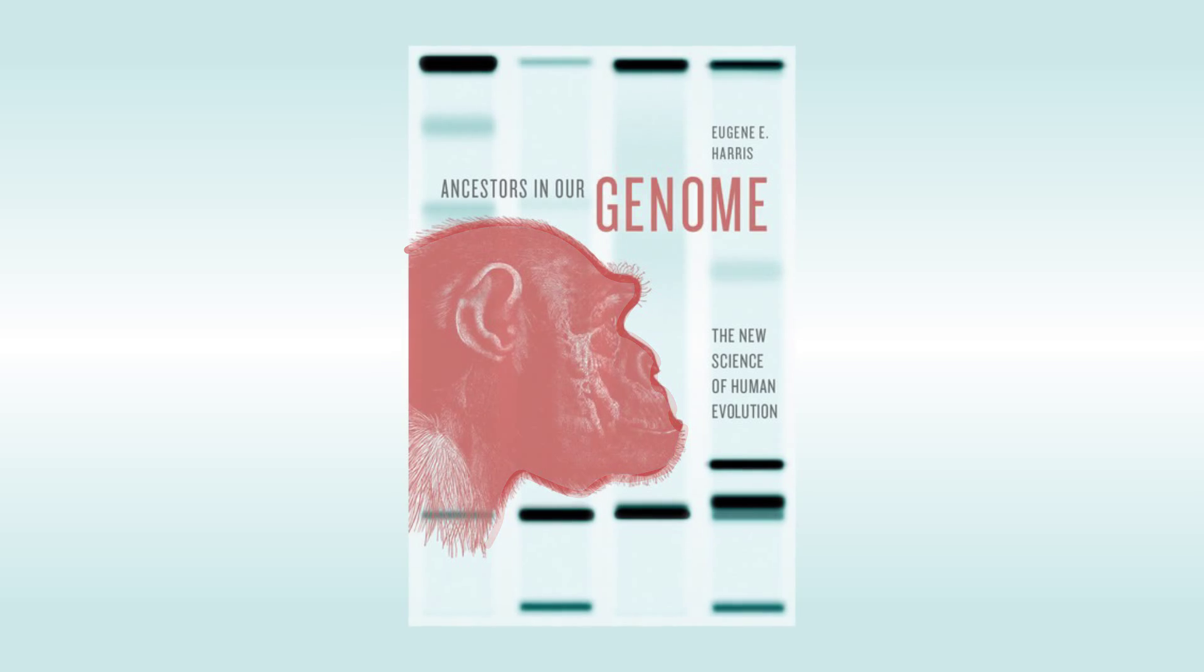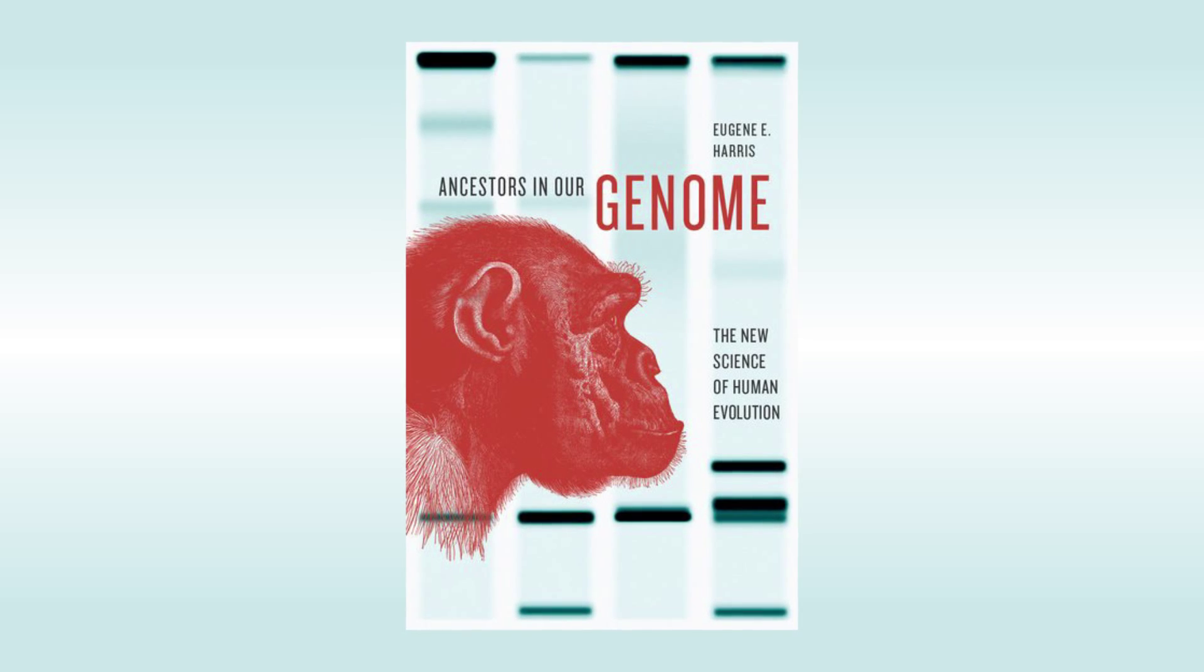Can the source of our ability to communicate using complex languages and to walk upright be found by learning to read our genetic code and comparing it to the genomes of other species? What other stories about our evolutionary past are written in our DNA and waiting to be told by the ancestors in our genome?